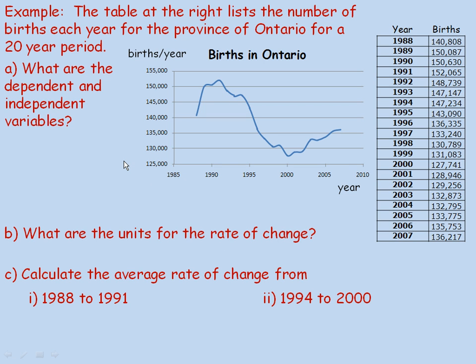Flipping over to the example on the second page, we're given some population data — the number of births per year in the province of Ontario, Canada for a 20-year period. I've plotted the births using an Excel spreadsheet and drawn this graph. On this axis is the number of births per year, and on this axis is the number of years.